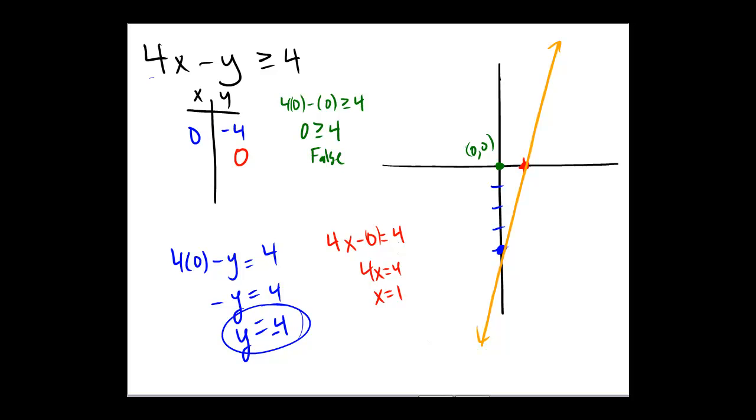...so this would be a false point, and thus this time the shading would be on this side of the line. We shade the side that does not include (0, 0) because (0, 0) was a false test point.